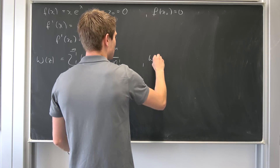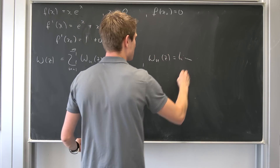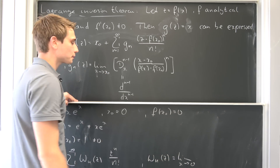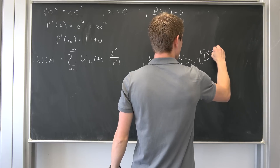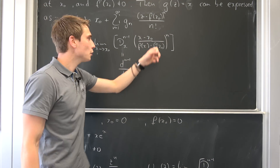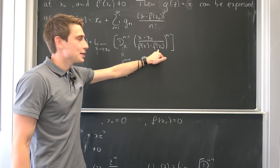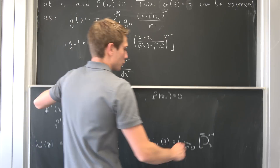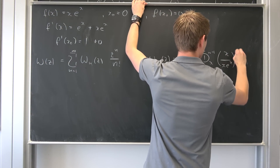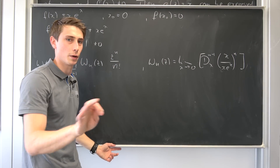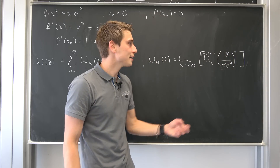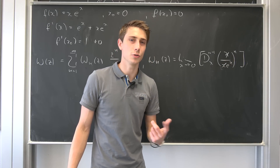Now we need to find Wₙ. This is defined as the limit as x goes to zero — since x₀ is zero — of the (n−1)th derivative with respect to x. The expression inside becomes x over (f(x) − f(x₀)), which is x over x·eˣ, since f(x₀) = 0. So we get x over x·eˣ to the nth power, and the x's cancel — giving us 1 over eˣ raised to the n, which is e to the negative n times x.